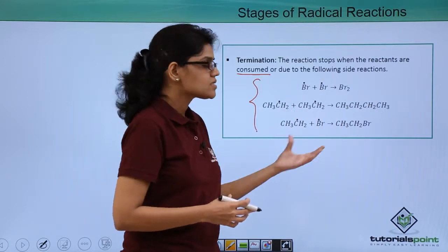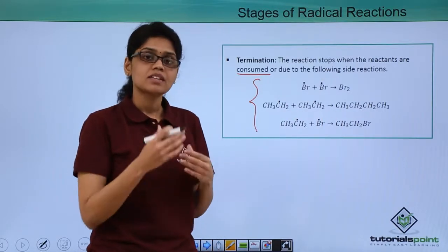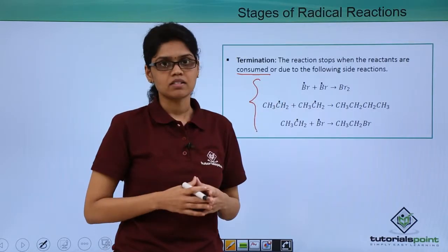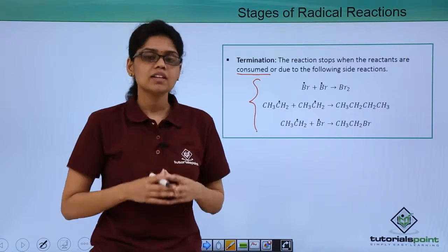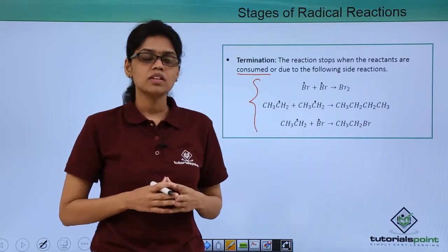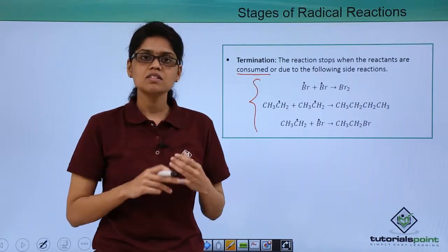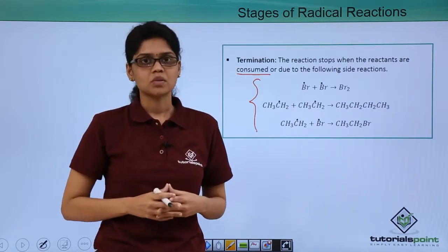These are the various side reactions by which the radicals get consumed completely and help in the termination of the free radical chain reaction. I hope you are very clear on the major steps involved in the mechanism of free radical reaction, which are initiation, propagation, and termination. Thank you.